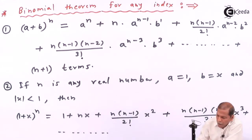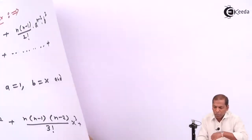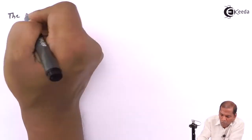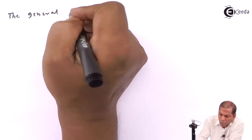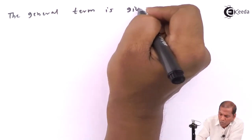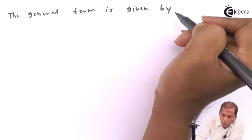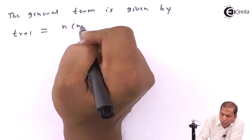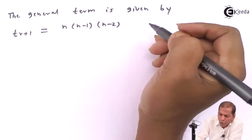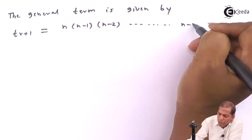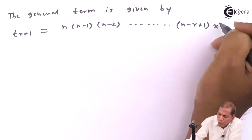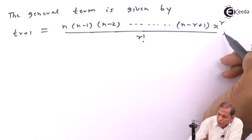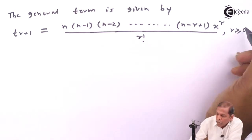In this case, the general term is given by: T_(r+1) = [n(n−1)(n−2)···(n−r+1) · x^r] / r!, provided r ≥ 0.